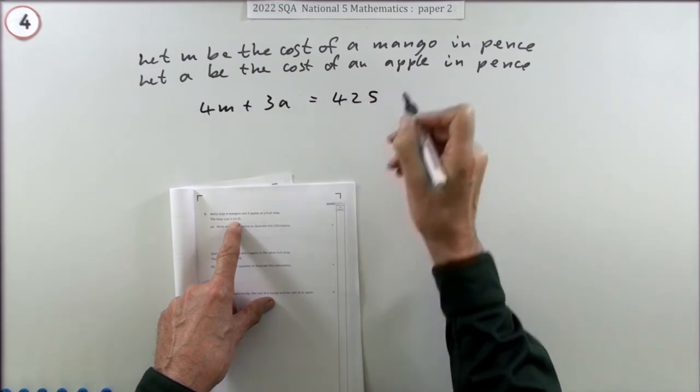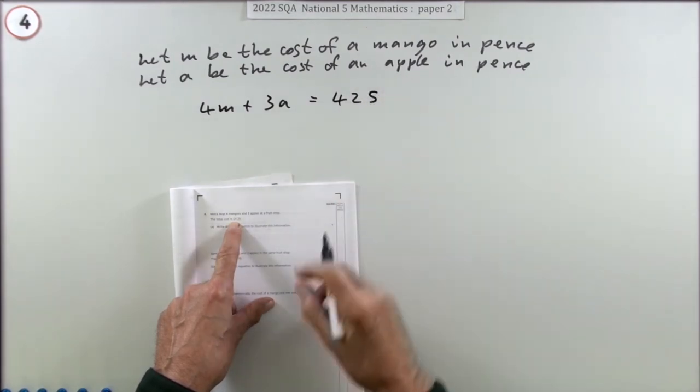Now translate this information. Four mangoes, that's 4m, and three apples, that's 3a, comes to £4.25. I'm going for whole numbers, pence. That is 425. That's the first part and that's worth a mark.